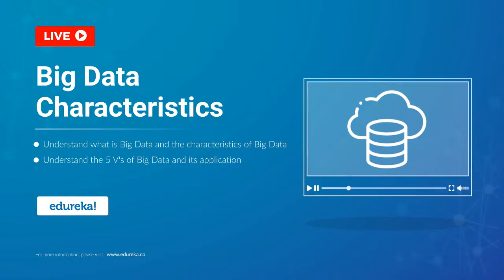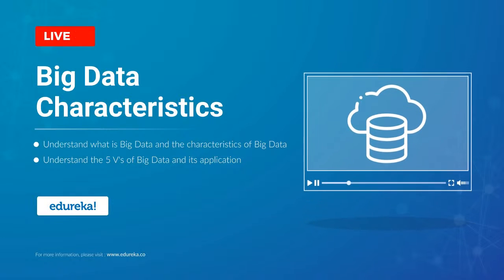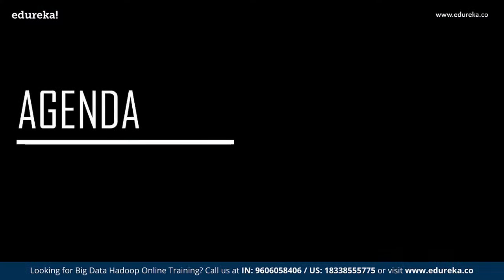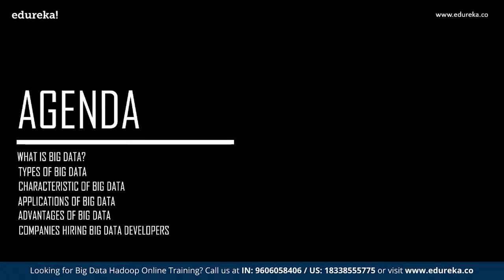All the five ways we are going to discuss will be interconnected. In order to explain what big data is and its characteristics, I will be covering the following topics: firstly, what is big data; followed by that, the types of big data; and then the key topic for today's discussion — the characteristics of big data, namely volume, variety, veracity, value, and velocity.